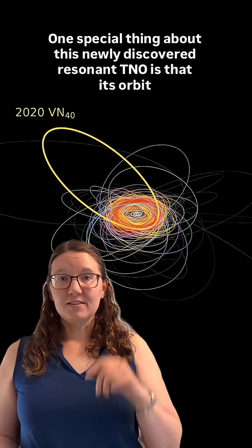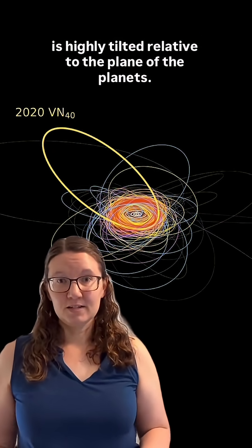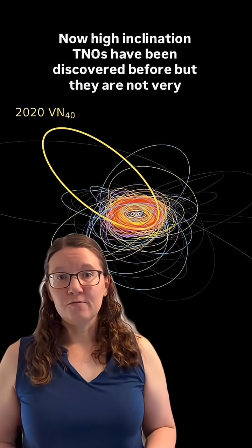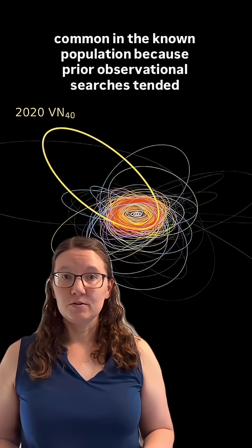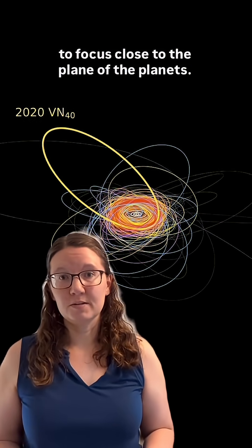One special thing about this newly discovered resonant TNO is that its orbit is highly tilted relative to the plane of the planets. Now, high-inclination TNOs have been discovered before, but they're not very common in the known population because prior observational searches tended to focus close to the plane of the planets.